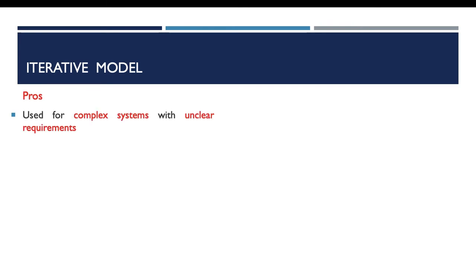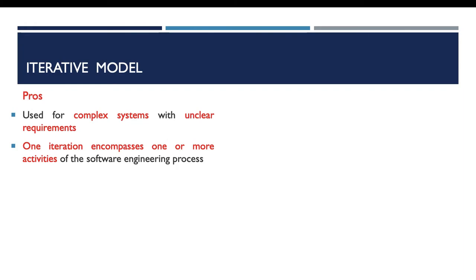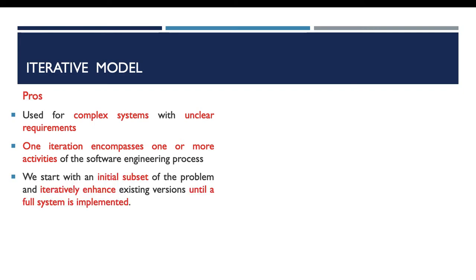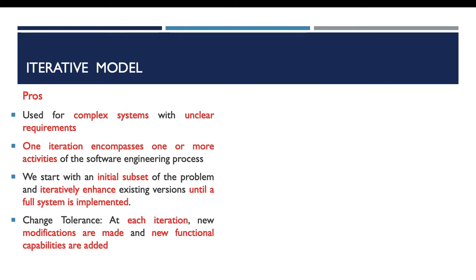Now for the iterative model: this model is used for complex systems with unclear requirements. One iteration in this model may include one or more activities. We start with an initial subset of the problem and iteratively enhance existing versions until a full system is implemented. This model is change-tolerant, so we can add new modifications and new functional capabilities at each iteration.